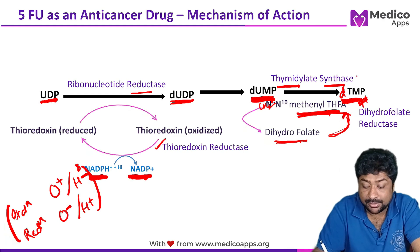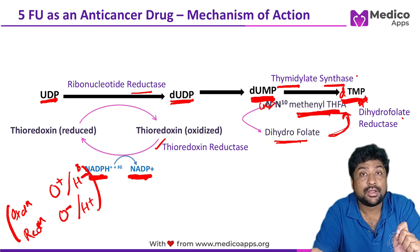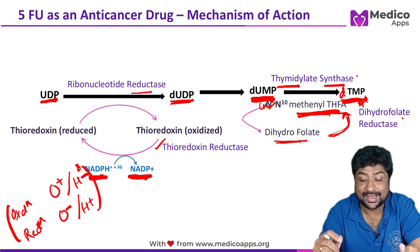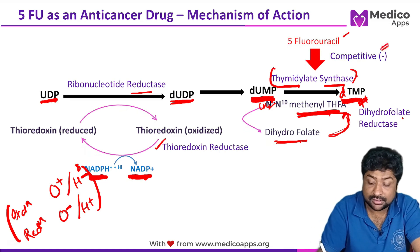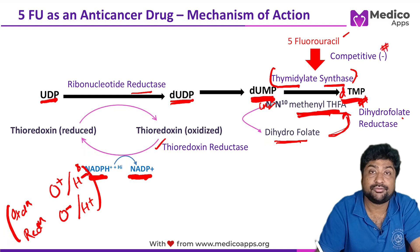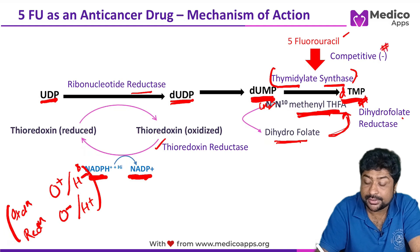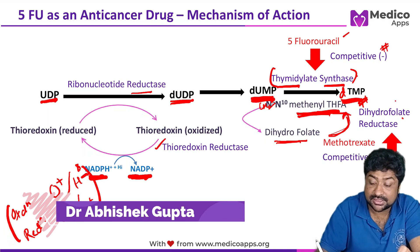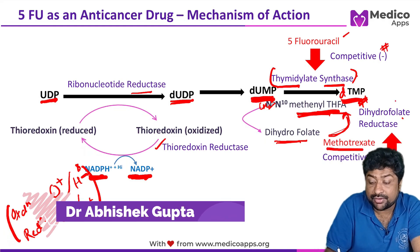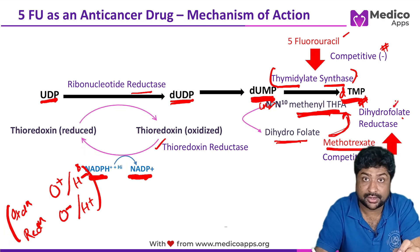Both thymidylate synthase and dihydrofolate reductase are very important points of intervention for anti-cancer drugs. First, 5-fluorouracil directly and competitively inhibits thymidylate synthase. Second, methotrexate competitively inhibits dihydrofolate reductase. These are key mechanisms to remember.